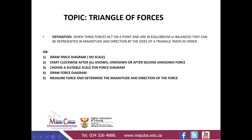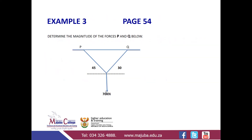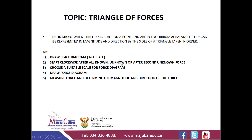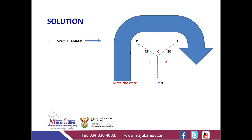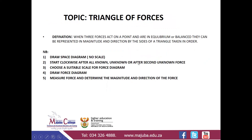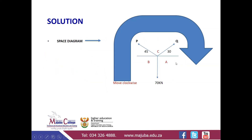Step two: start clockwise after all known forces. How many forces are known? Only one — that is the 70 kN force. We have one known force and two unknown forces. That means we will label them A, B, and C, starting after the second unknown force. When drawing the triangle of forces, we always move clockwise.